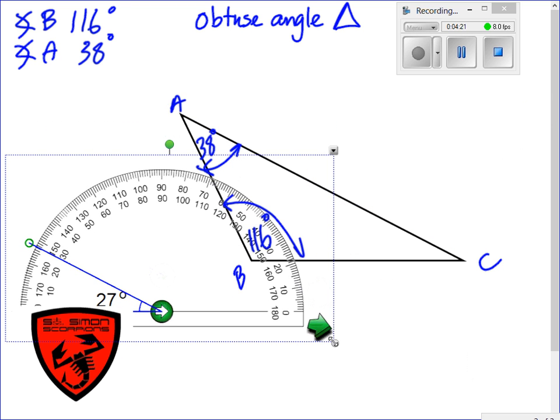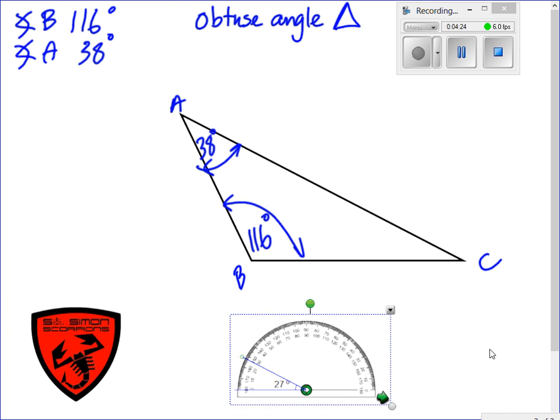I'm going to reduce the interactive protractor, put it out of the way. What did we say? 27 degrees. 27 degrees from this way to this way there. So angle C is 27 degrees.